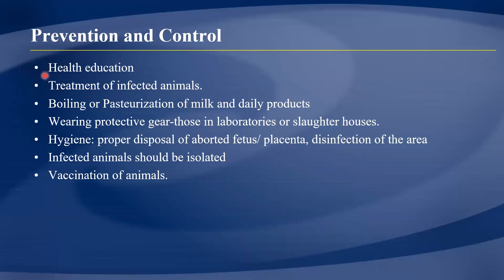Prevention and control: since brucellosis is a zoonotic disease, people need to be educated about safe interaction with animals. Key measures include treatment of infected animals, boiling or pasteurizing milk and dairy products, wearing protective gear when handling slaughtered animals or working in laboratories, and proper disposal and disinfection after contact with aborted fetuses, placenta, or other tissue products. Infected animals should be isolated pending treatment, and vaccination of animals is also important.